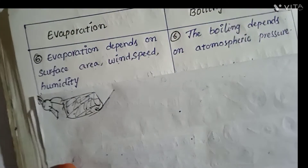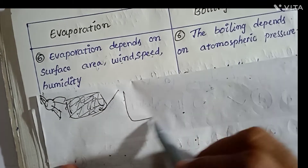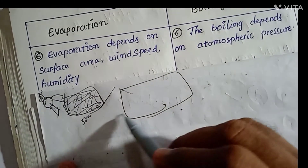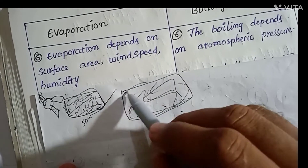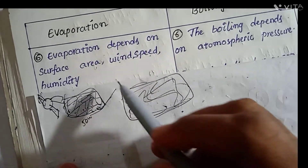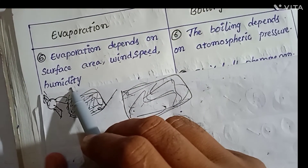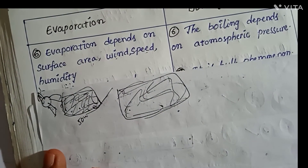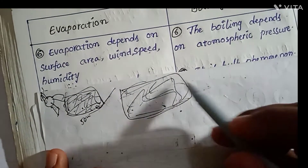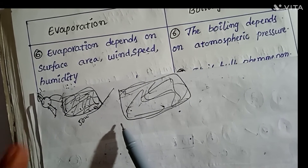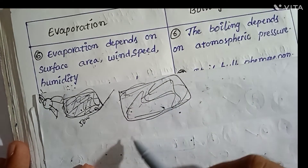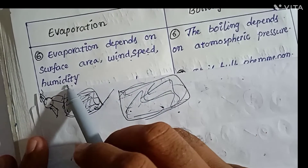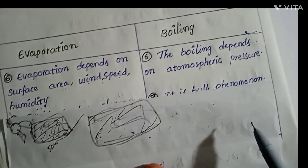Evaporation depends on wind speed and also surface area. For the same amount of water, say 50 ml, if the water is spread out, surface area increases, so evaporation increases. It also depends on humidity — humidity is nothing but the amount of water vapor present in the atmosphere. If humidity is low, evaporation is higher. So evaporation depends on surface area, wind speed, and humidity.